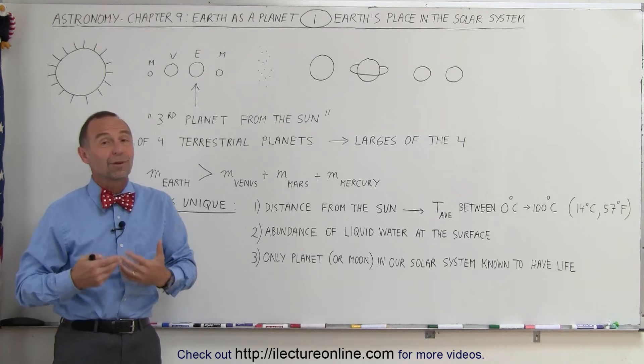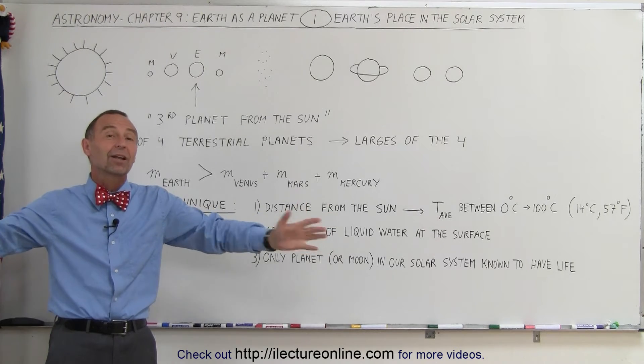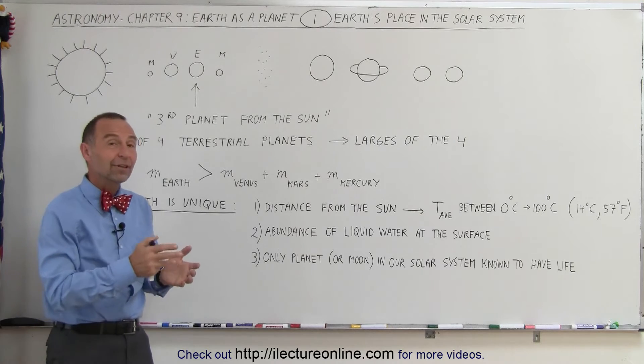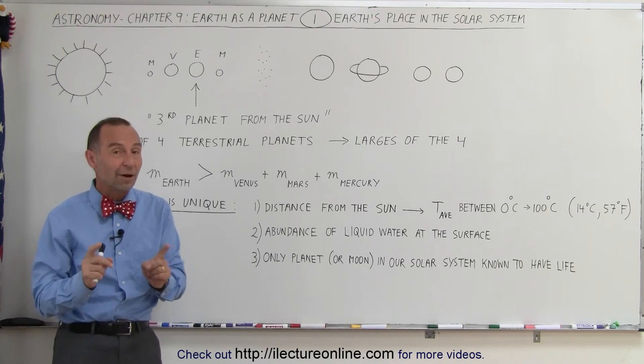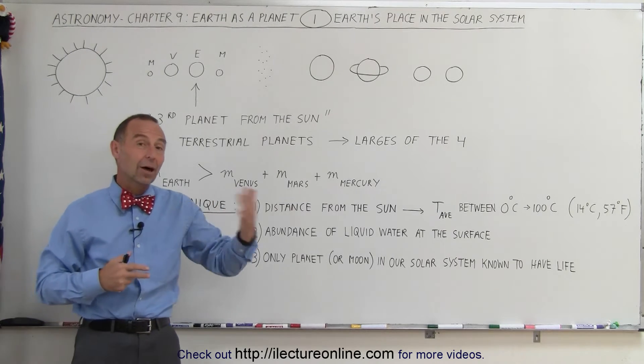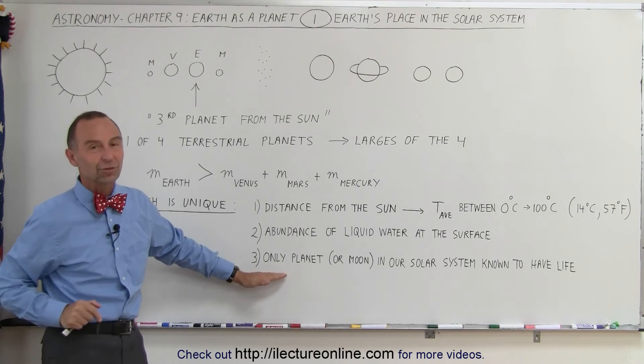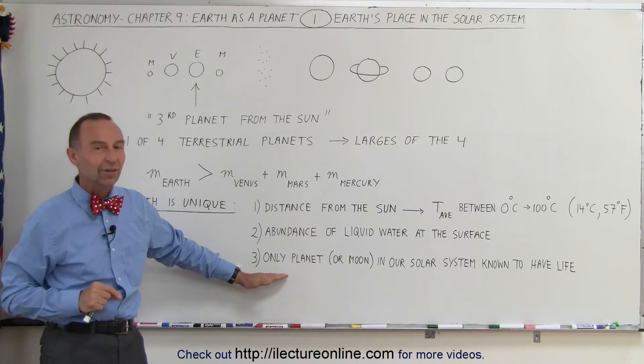Mathematically, probability-wise, we must say there's probably thousands, millions, maybe even billions of planets out in the universe that do have life on them as well. However, for now, the only planet, and compared to even all the moons in our solar system, our planet, the Earth, is the only place in the solar system where we know there is life.